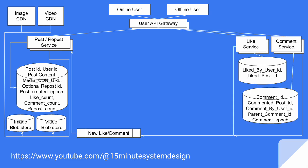Now let's talk about two more services: like service and comment service. For the like service, we have a database with a mapping of which user liked which post — liked by a particular user ID and which post was liked. Similarly for comment, we have a comment ID, which post it was commented on, and by which user: user ID, post ID, comment ID. In case of a nested comment, we should also have the mapping of the parent comment ID and the time the comment was posted: comment epoch.